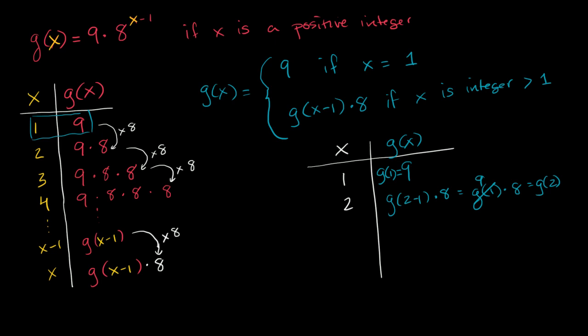So now let's go to 3. So g of 3 is equal to, we're going to this case, it's equal to g of 3 minus 1 times 8, so that's equal to g of 2 times 8. Well, what's g of 2? Well, g of 2, we already figured out, is 9 times 8. So it's equal to 9 times 8, that's g of 2, times 8 again. And so you see we get the exact same results. So this is the recursive definition of this function.